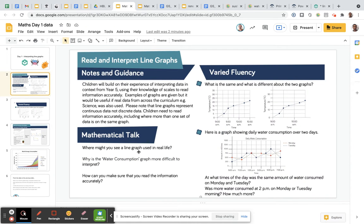Right, so there's some questions for you to think about here. This says notes and guidance. This is for the teacher, but also it's good for you to read through yourself. So I'll just read this aloud to you as you go. It says children will build on their experience of interpreting data in the context from year five. So that's year five in the UK is grade four. So using their knowledge of scale to read information accurately.